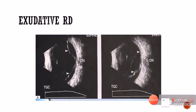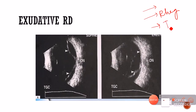Now, there are three types of RDs: the exudative RD, the regmatogenous RD, and the tractional RD. Let us see example B-scan images of each type of RD.